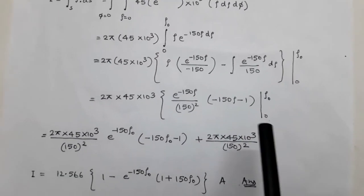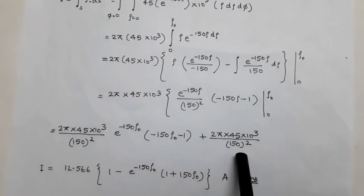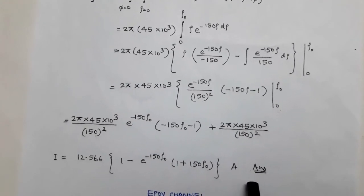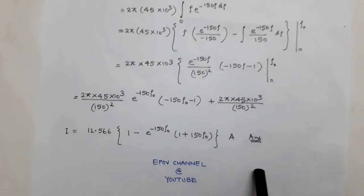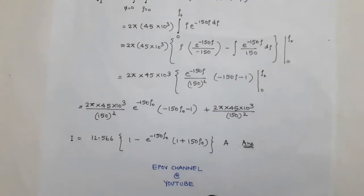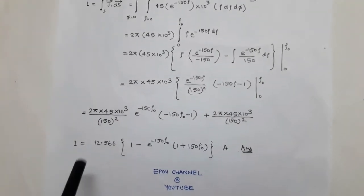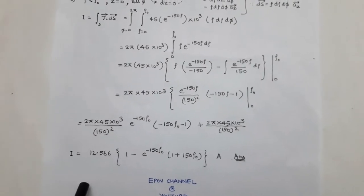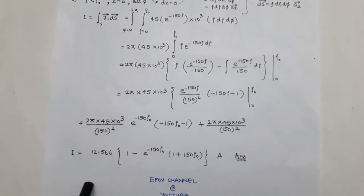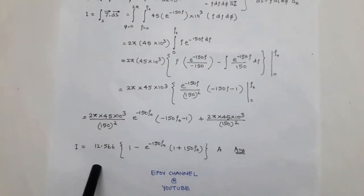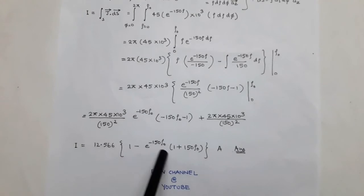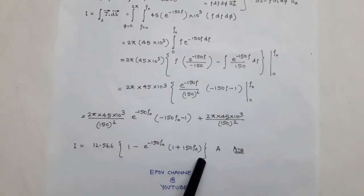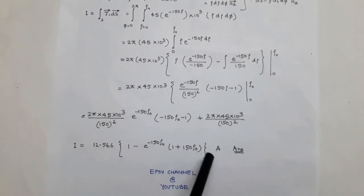After integrating and applying limits from 0 to ρ₀, the total current I = 12.566 × [1 − e^(−150ρ₀)(1 + 150ρ₀)] amperes.